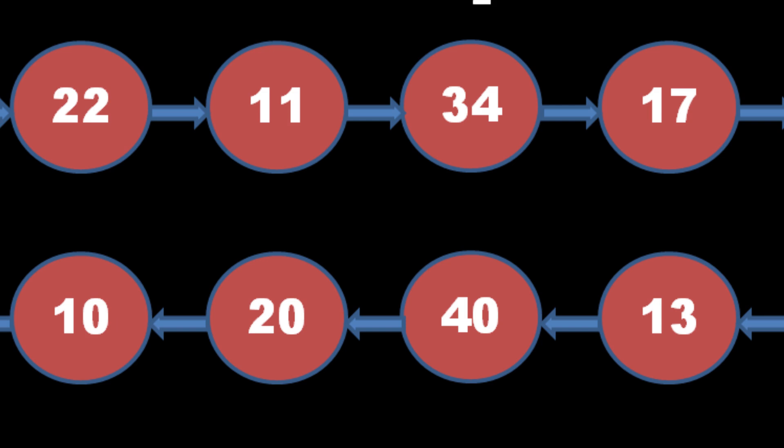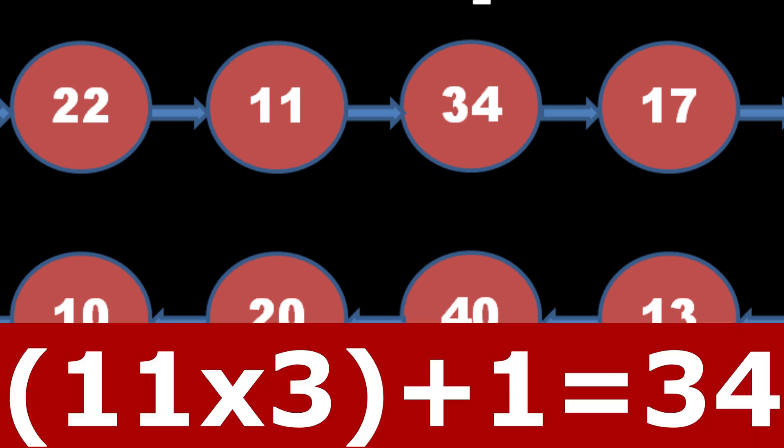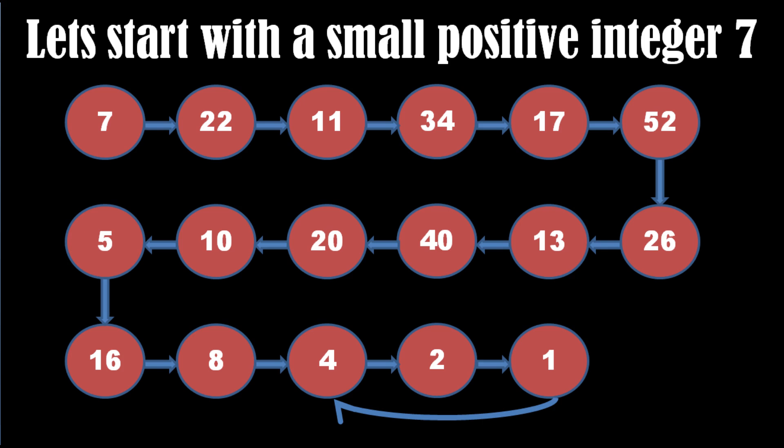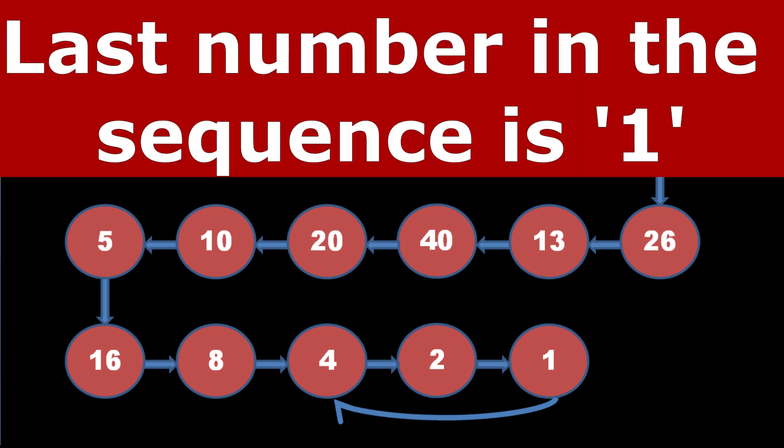11 is an odd number, so multiply it by 3 and add 1. This time we get 34 as the next number in the sequence. Now, all we need to do is just repeat the same process as per the rule. At last stage, you will find that you reach number 1.